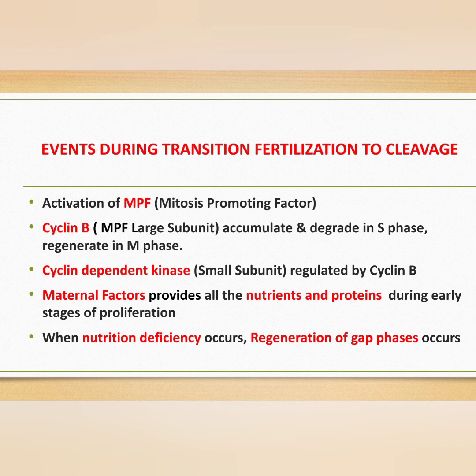The cell cycle has both M phase and interphase. MPF activity is higher during M phase because Cyclin B is active during the mitotic phase. During S phase, Cyclin B accumulates and then degrades. The degradation of Cyclin B brings the cell back to S phase.